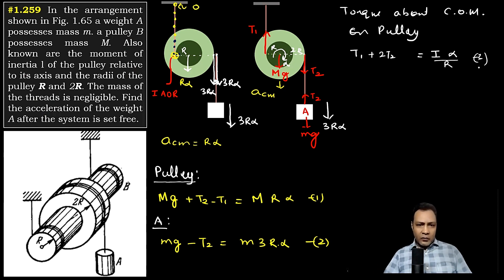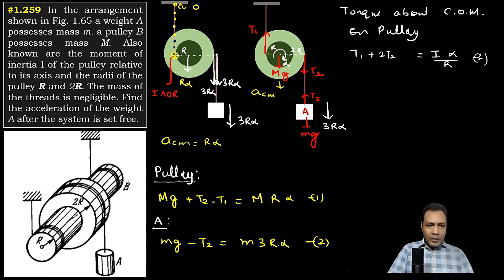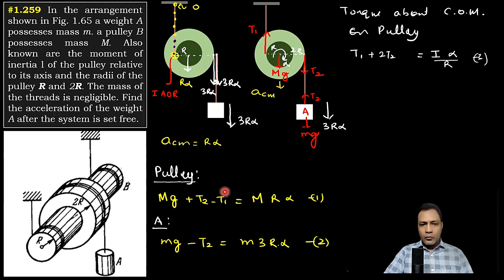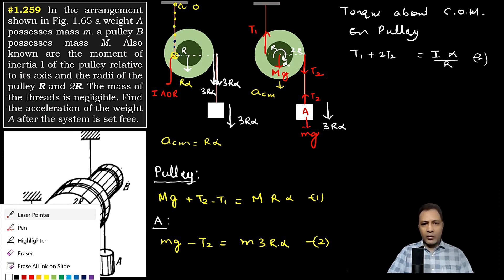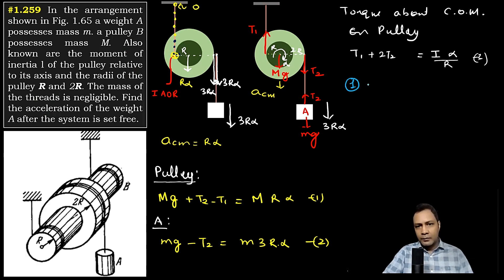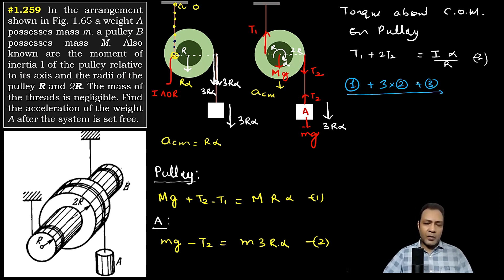To eliminate the tensions, I'll add equation 1 and equation 3, then add 3 times equation 2. This cancels T1 (minus T1 and plus T1 cancel) and also cancels T2 (minus 3T2 and plus 3T2 cancel), leaving only the known quantities.